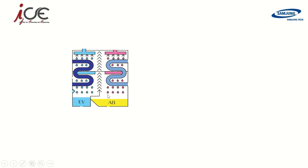The second part, located on the right side, is the absorber, which consists of a large bundle of copper pipes. Inside the absorber, concentrated lithium bromide absorbs the water vapor generated in the evaporator. So lithium bromide in this case is the absorbent — that is why this part is called the absorber.